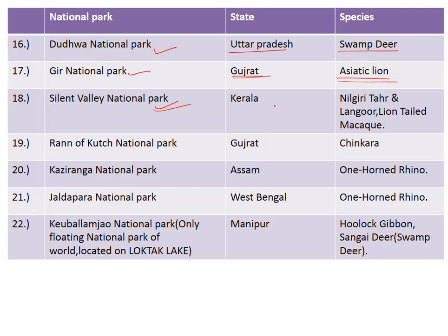Silent Valley National Park is situated in the state of Kerala and is famous for the Nilgiri tahr, Nilgiri langur, and lion-tailed macaque. Next is Rann of Kutch National Park in the state of Gujarat, famous for the chinkara.